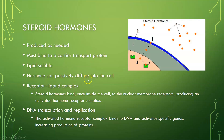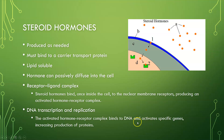The hormone can passively diffuse into the cell. If you think about it, the cell membrane is a bilayer of phospholipids, so it's lipid and lipid-soluble, so they can just kind of phase through that cell membrane. What they generally do is enter into the nucleus and bind to form a receptor-ligand complex. For example, steroid hormones bind once inside the cell to the nuclear membrane receptors, producing an activated hormone-receptor complex. That usually activates DNA transcription and replication. The activated hormone-receptor complex then binds to DNA and activates specific genes, increasing the production of proteins. And those are your basics for hormones.